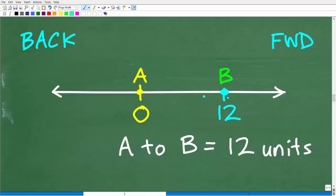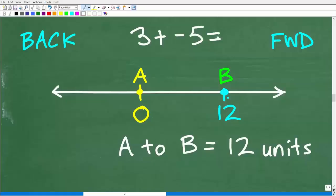A lot of you might have forgotten the real number line or just basic positive and negative number concepts. When you learn how to add positive and negative numbers, this number line model is pretty common. For example, three plus negative five equals negative two. I like to teach positive and negative numbers using a variety of models — one I like is money. Negative values are like debt, so here you owe $5 but you have $3. You give all $3 but still owe $2, so the result is negative two.